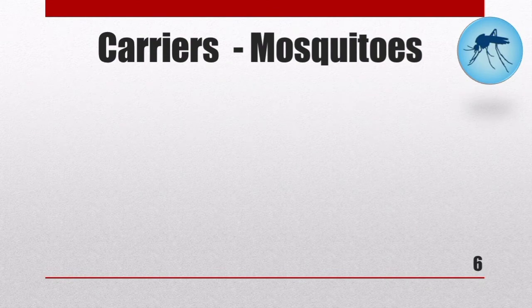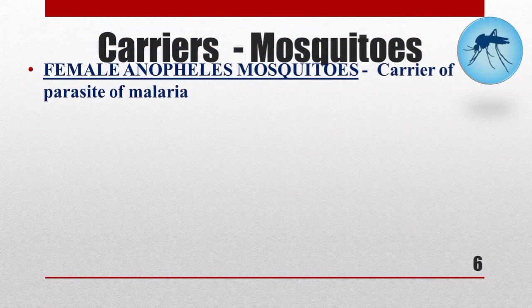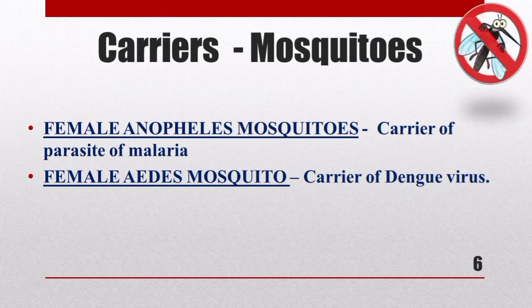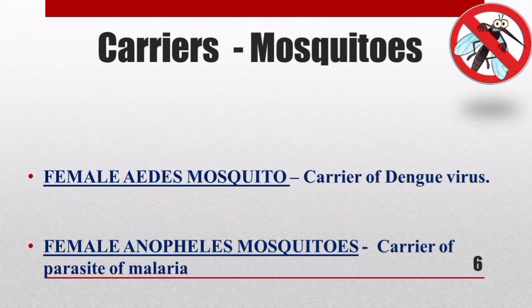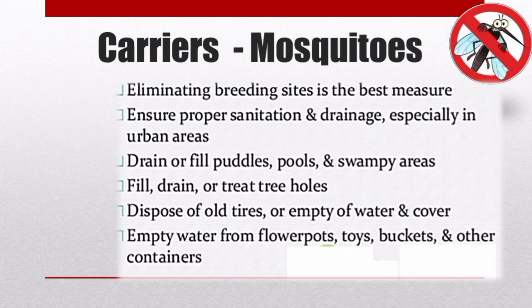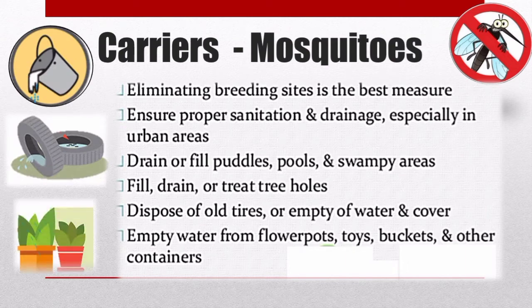Another example of a carrier is the female Anopheles mosquito, which carries the parasite of malaria, and the female Aedes mosquito, which acts as a carrier of the dengue virus. To control the spread of malaria and dengue, mosquitoes breed in stagnant water, so their breeding sites should be eliminated. Ensure proper sanitation and drainage, especially in urban areas.